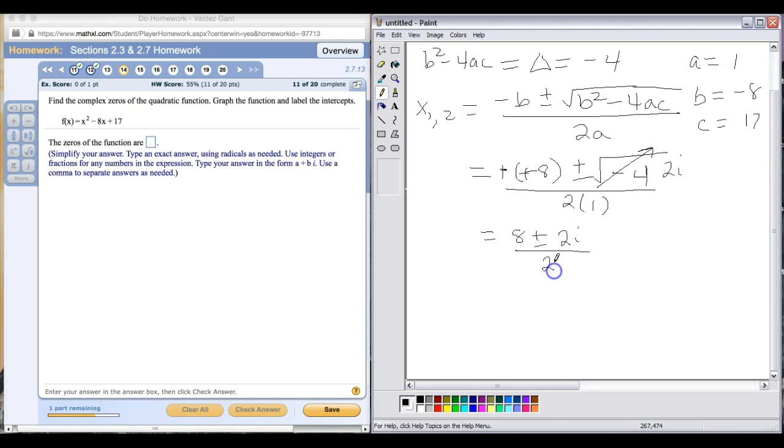We take all that divided by 2, so 8 divided by 2 is 4, plus or minus 2 divided by 2 is 1. You could simplify that to 4 plus or minus i. So our two complex solutions would be 4 plus i and 4 minus i.